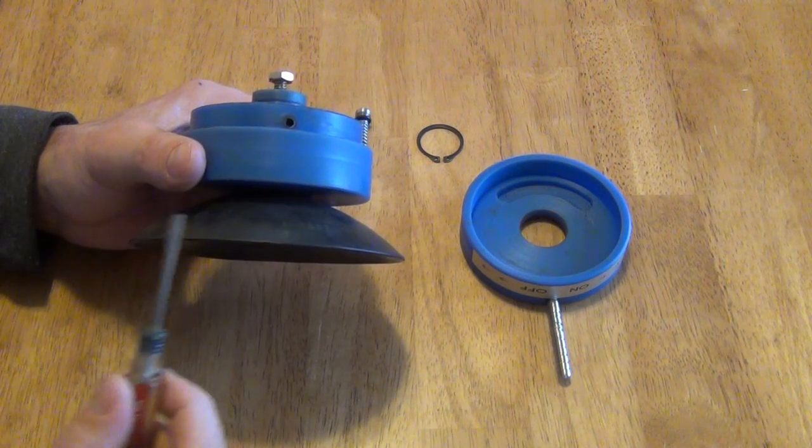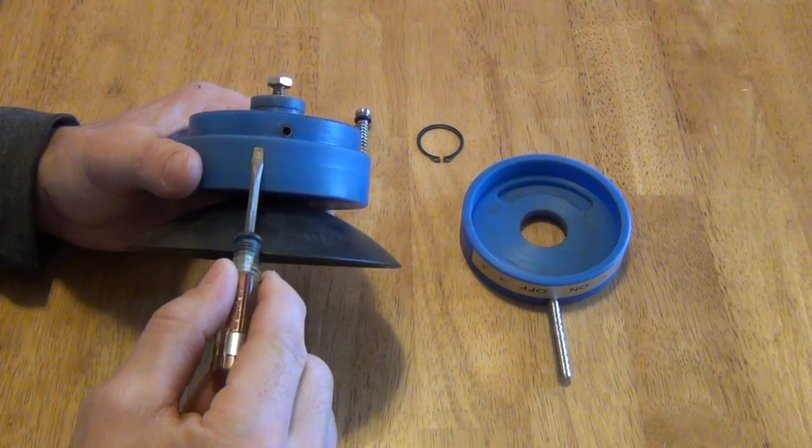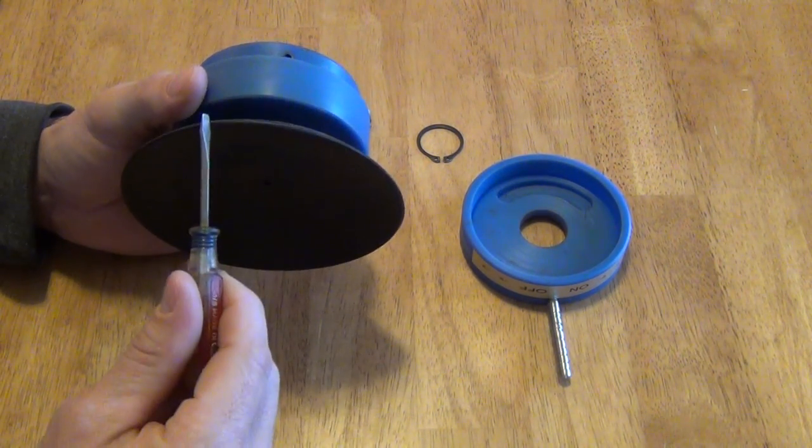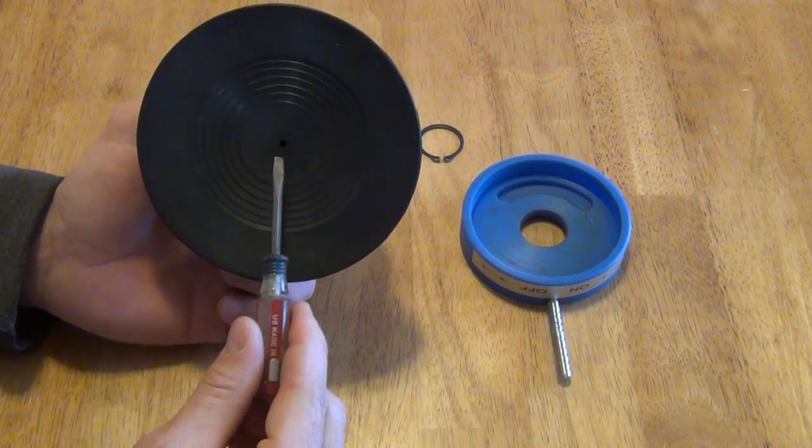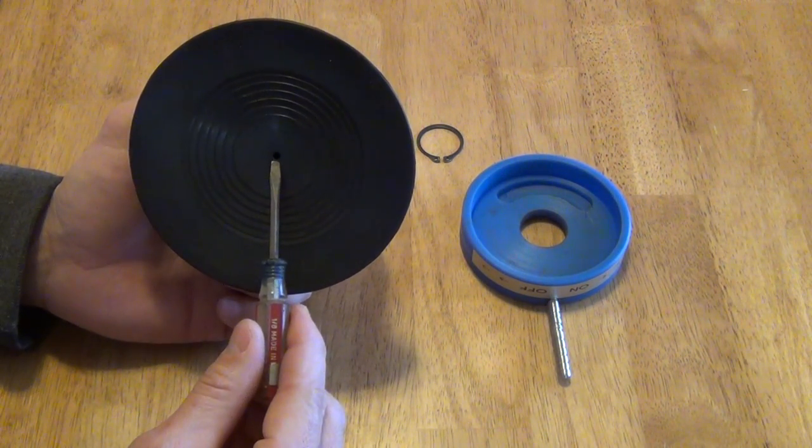The base of the suction cup consists of the mount and the suction cup. Notice the hole here that is placed in the middle.